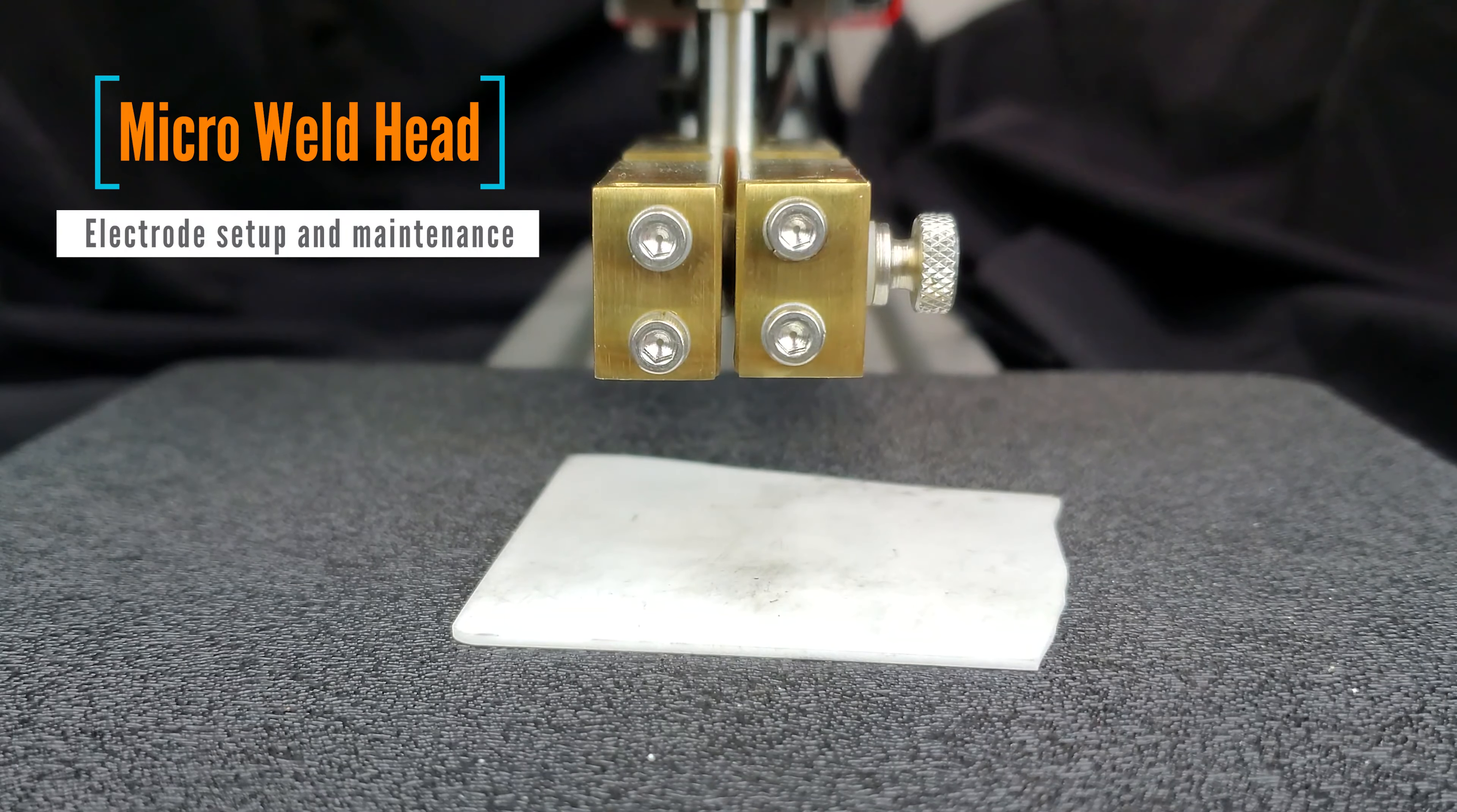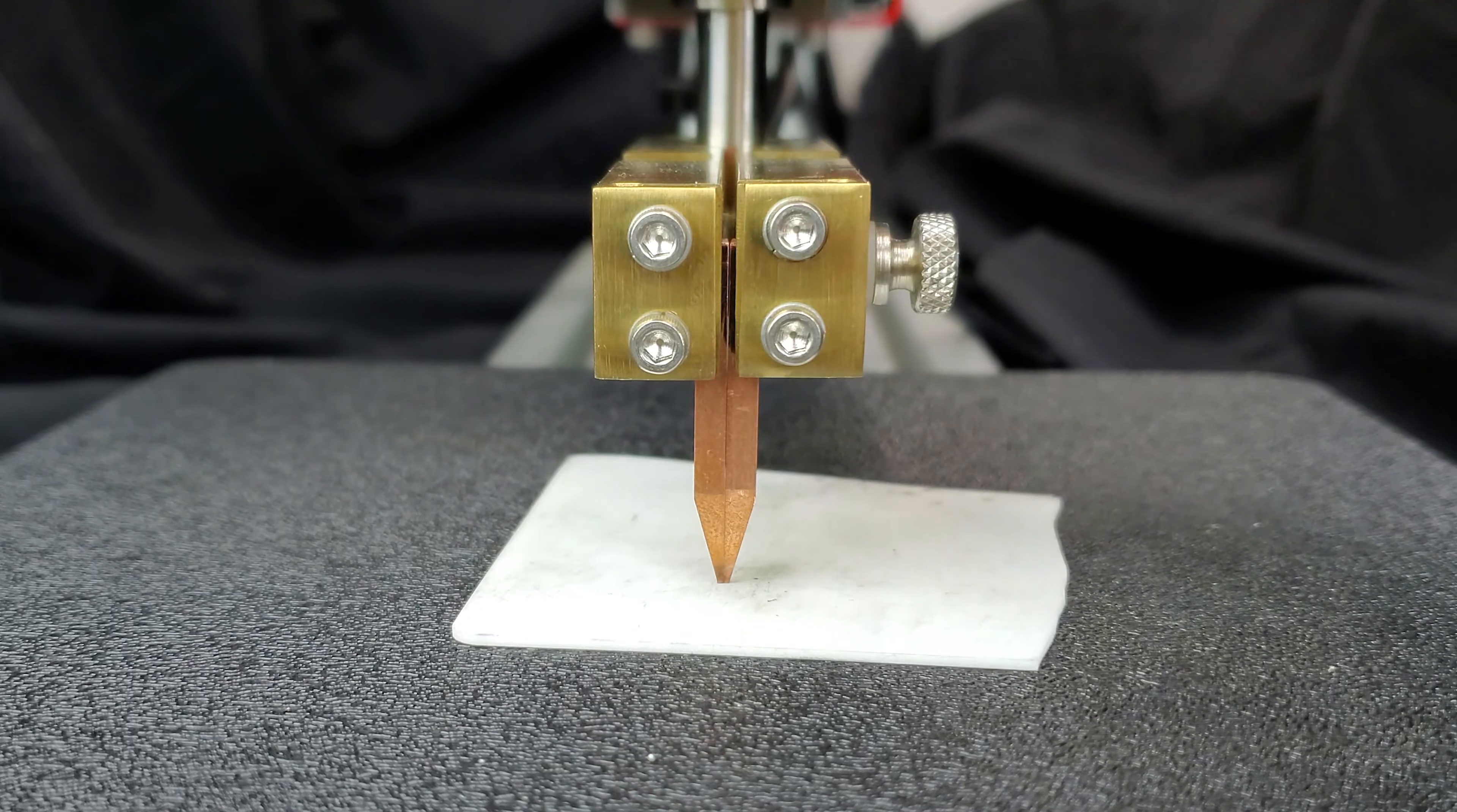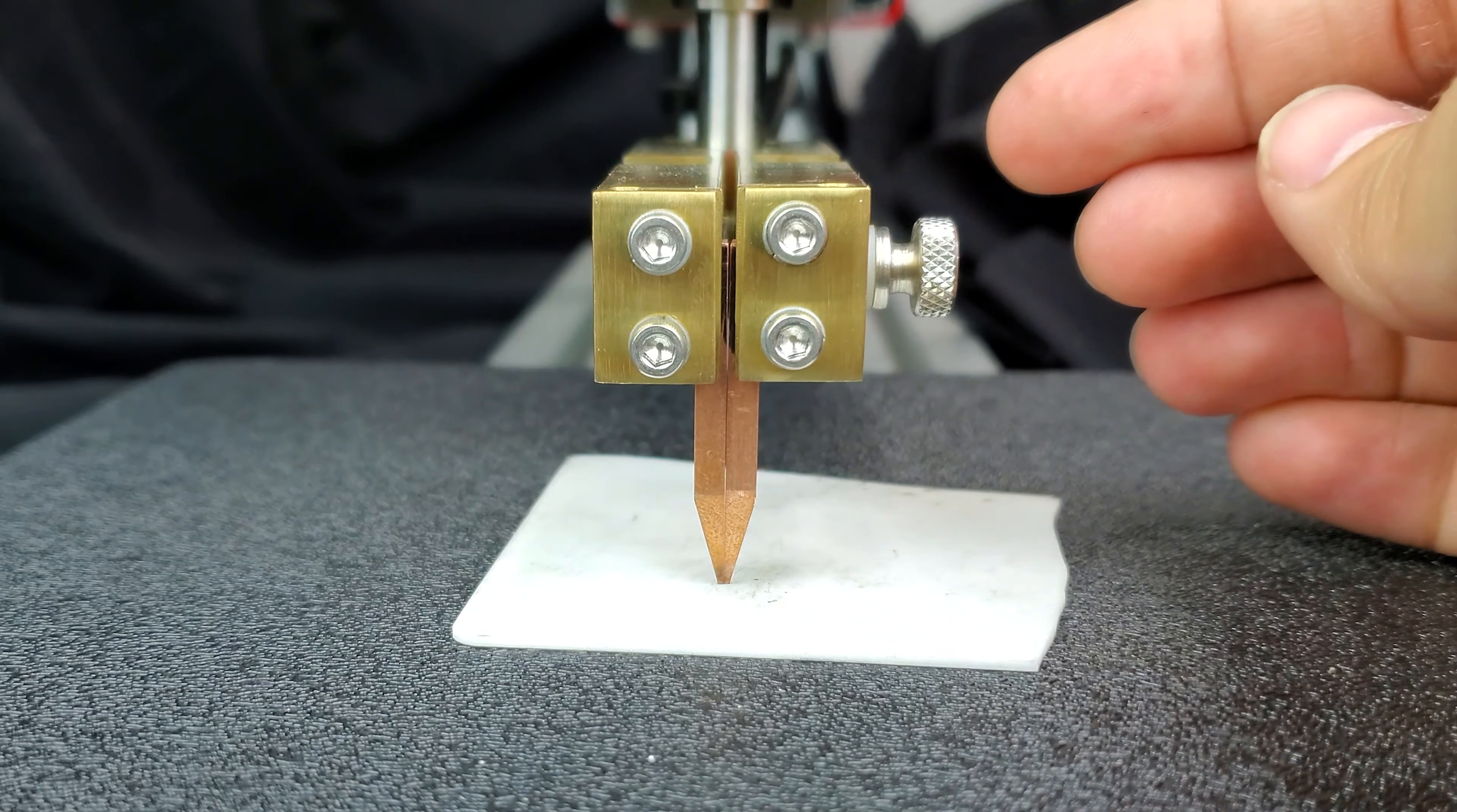We're going to be setting up a micro weld head and showing how to maintain the electrodes while it's in there. First, we're going to insert our electrodes. We're going to lower our weld head a little bit.